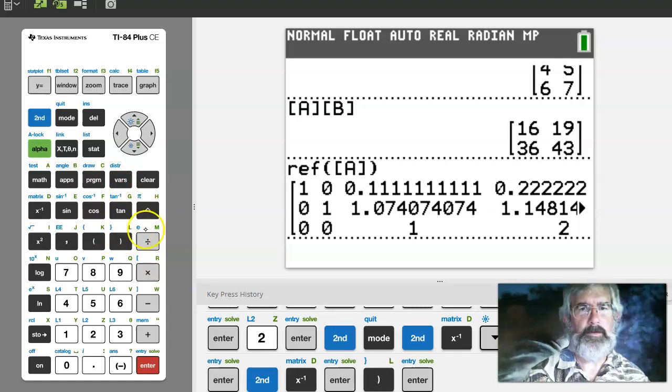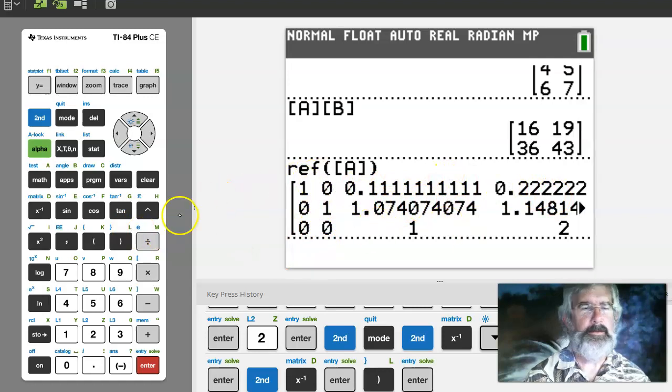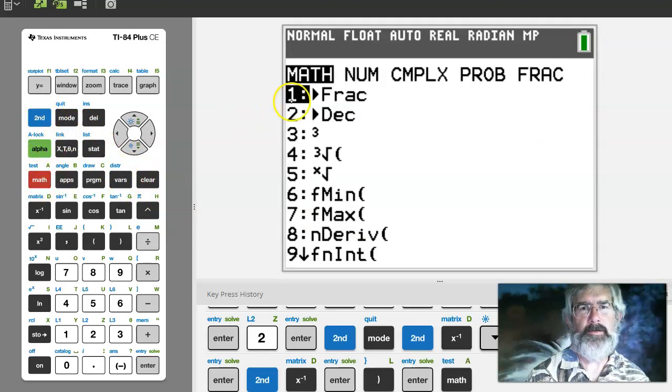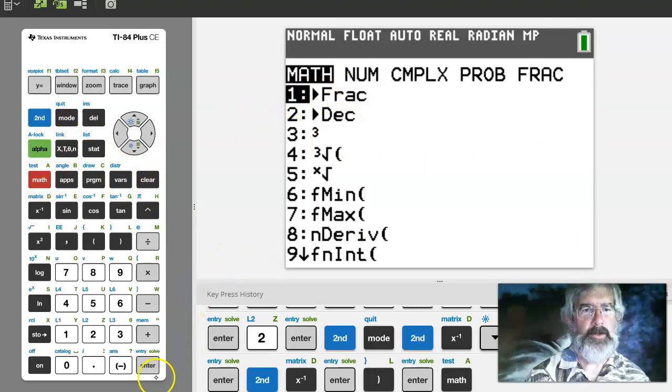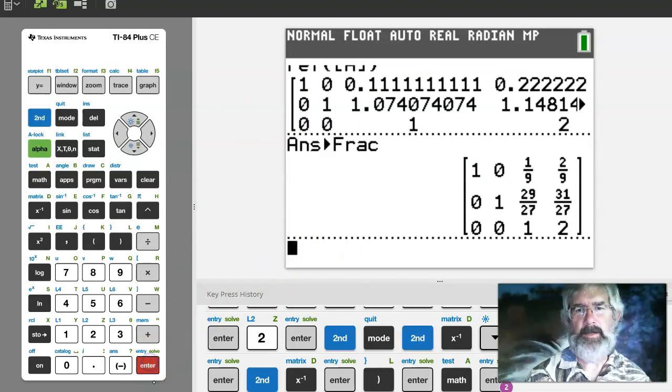Actually two things I want to do first. Sometimes when I get these decimal expansions I like to see them as fractions. So then I just say math and the first thing under math is to fraction. So if I hit enter it's going to be answer to fraction and it gives me that matrix in fraction form.